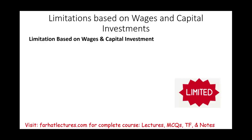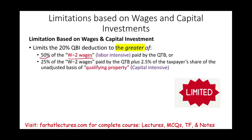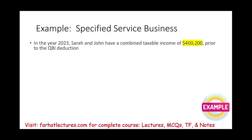Now let's recall the wages and capital investment limitation. We compute the greater of: (A) 50% of W-2 wages, or (B) 25% of W-2 wages plus 2.5% of the unadjusted basis of qualified property. We choose the greater of A and B, then compare that to the 20% QBI amount.